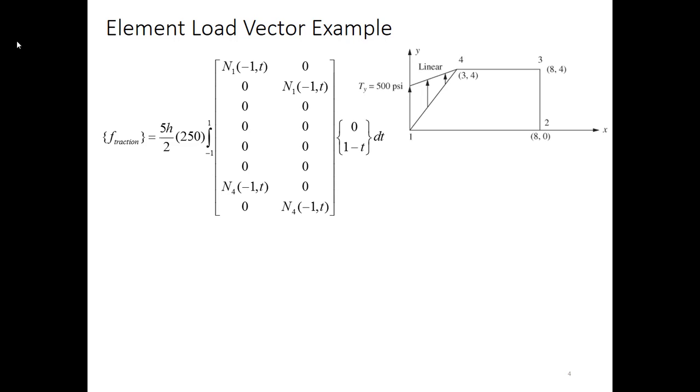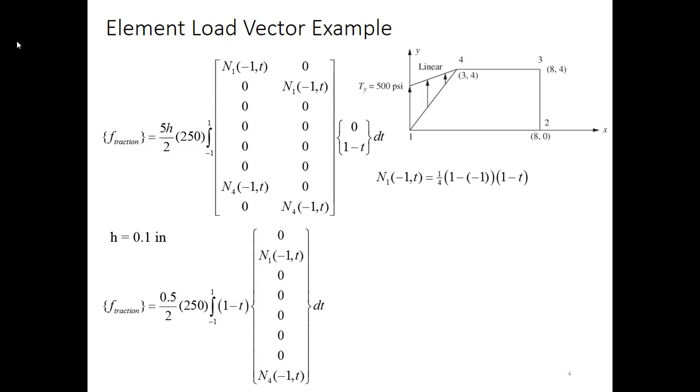So bring this home. Here's what our integral looks like. We're going to do the multiplication. When we do that, we end up with just two non-zero terms, where here I've also plugged in that h equals 0.1 inches. Just two non-zero terms, and those correspond to the y-force at node 1 and the y-force at node 4. That's what we'd expect. Plugging in the value of n1 at negative 1 comma t, that's going to be 1 half times 1 minus t. When I put that into this piece of the integral, the force becomes 83.3 pounds.